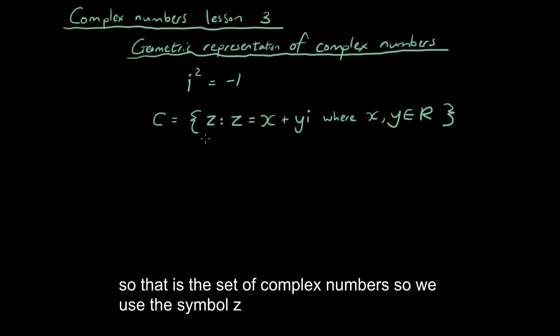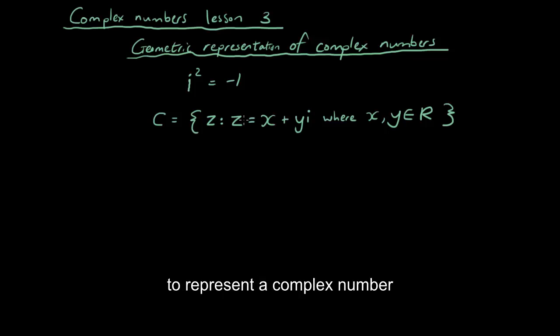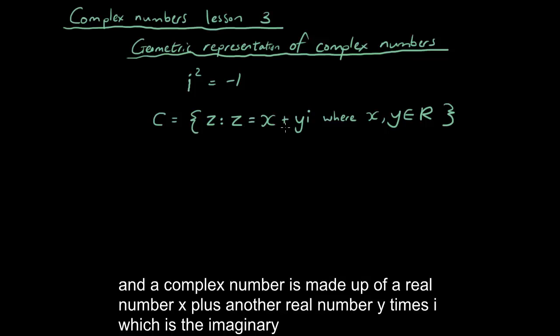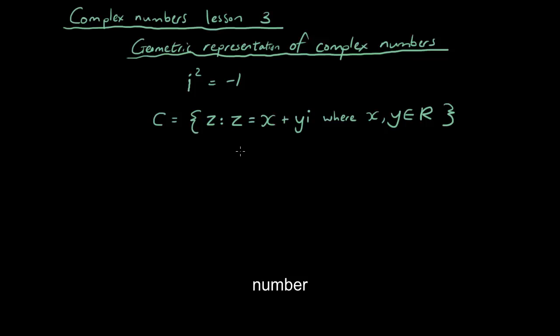So that is the set of complex numbers. We use the symbol z to represent a complex number. And a complex number is made up of a real number x plus another real number y times i, which is the imaginary number.